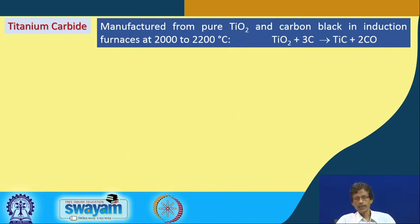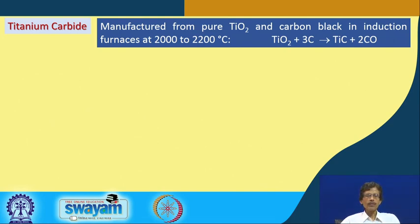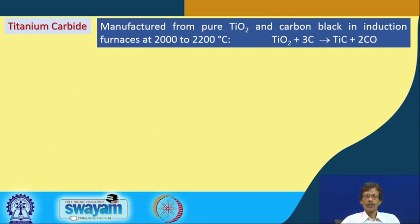For making titanium carbide, the metallic oxide TiO₂ is used with carbon black. Using an induction furnace at 2000 to 2200°C, TiO₂ reacts with 3C to give TiC along with 2CO. Two parts of carbon form carbon monoxide and one part converts titanium to titanium carbide.